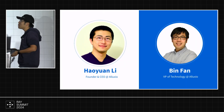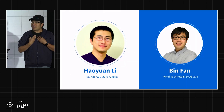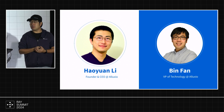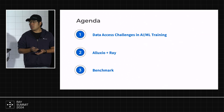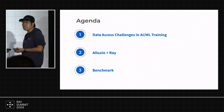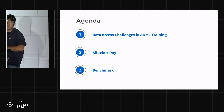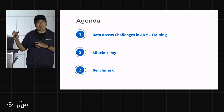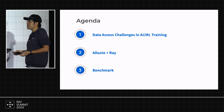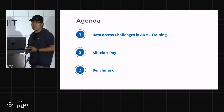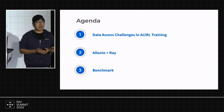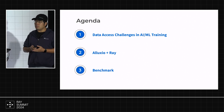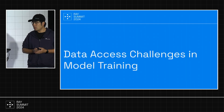So first, let's introduce ourselves. I'm Bin, VP of Technology at Luxio, founding engineer at Luxio. And we also have Haoyun Li, our CEO and founder. Today we're going to talk about data access challenges in AI and machine learning settings. Specifically, because this is the Ray Summit, we want to highlight the story of Luxio and Ray together — what benefits we can see and why people want to think about this stack. We also want to show some numbers and benchmarks.